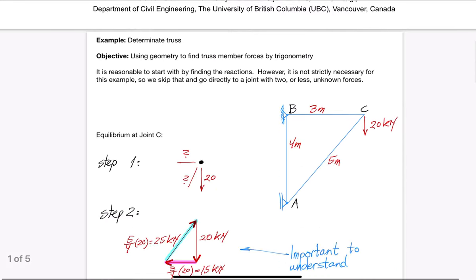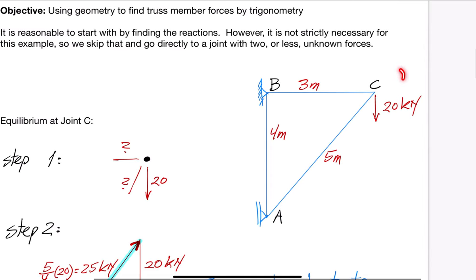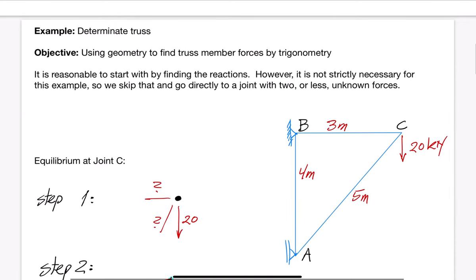The example shown here on the right-hand side is the first truss we encounter in this short course. It consists of three truss members, one pin support at the top, and vertical roller support at the bottom. Notice the 20 kN load at joint C.